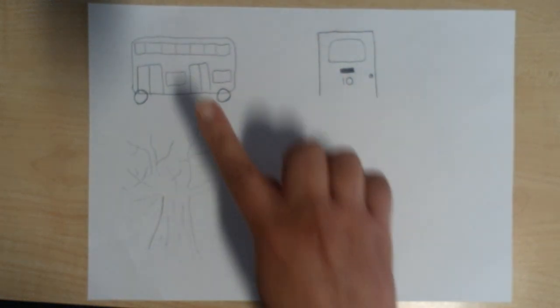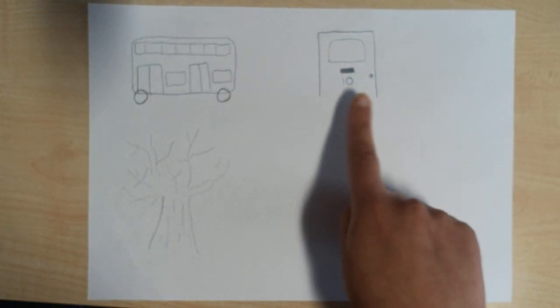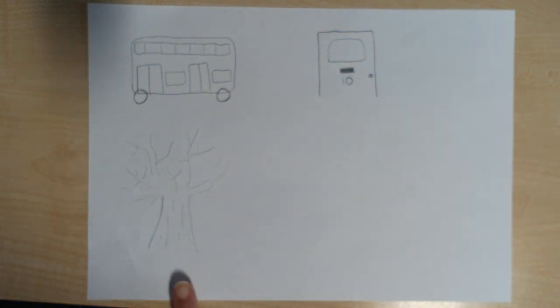So on my journey I could see a bus, I could see a door with a number 10, and I could see a tree. Now what we'd like you to do is draw your own pictures of what you could see and then you could have a go at labelling them.